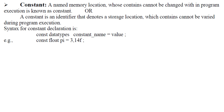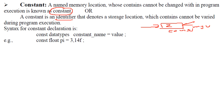Constants. A named memory location whose contents cannot be changed during program execution is called a constant. A constant is an identifier naming a storage location whose contents cannot be varied. If you use the 'const' keyword in front of a variable declaration, the compiler will indicate an error if you try to change its content. The syntax is: const, followed by the data type, then the constant name with an equals sign and the value. For example, 'const float pi = 3.14f' — you don't want to change the pi value in your program.